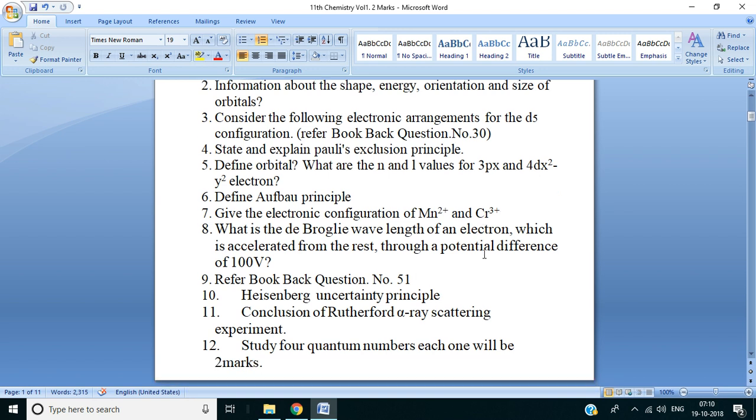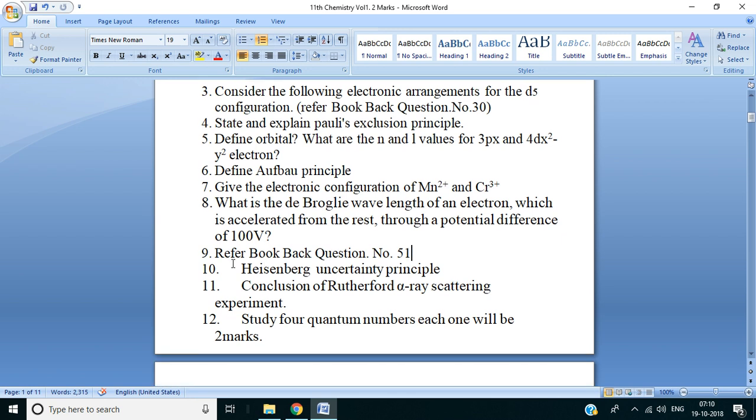8: What is the de Broglie wavelength of an electron which is accelerated from rest through a potential difference of 100V? 9: Refer book back question number 51. 10: Heisenberg uncertainty principle. 11: Conclusion of Rutherford's alpha ray scattering experiment. 12: Study four quantum numbers - each one will be 2 marks.